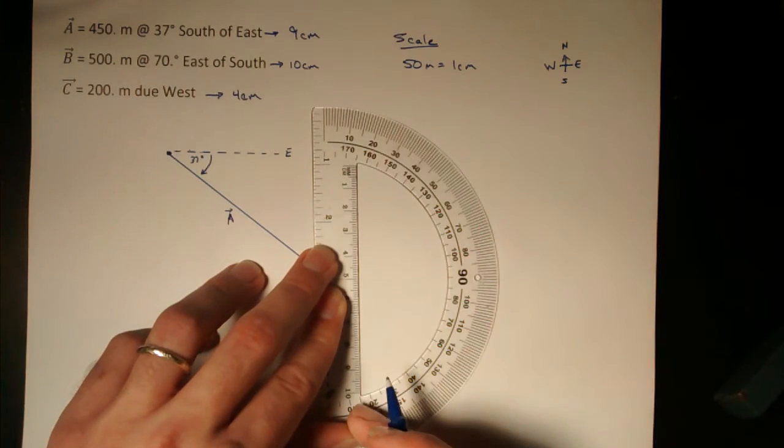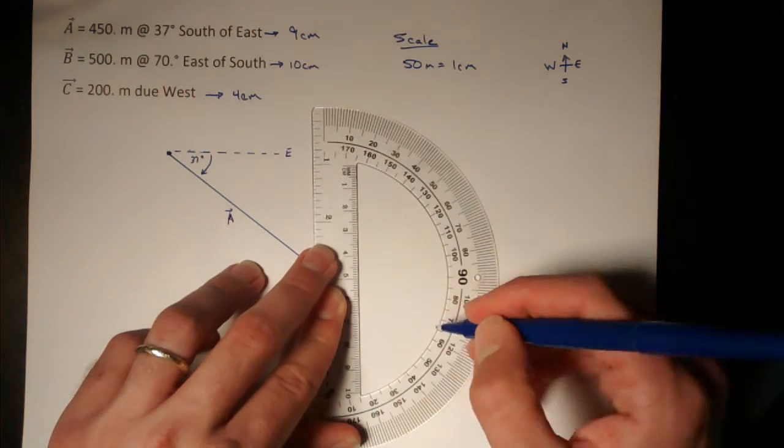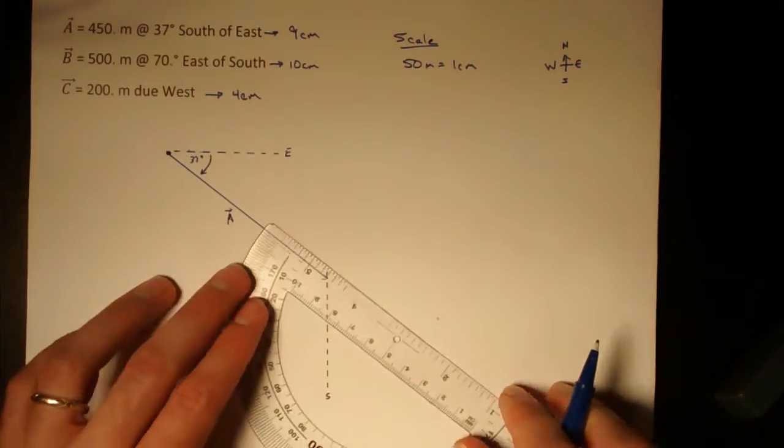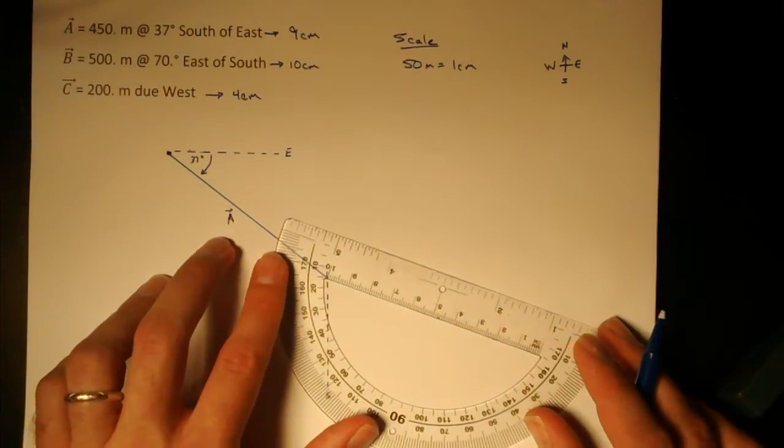And I'll measure 10, 20, 30, 40, 50, 60, 70 degrees east of south. Heading in that direction, 10 centimeters.